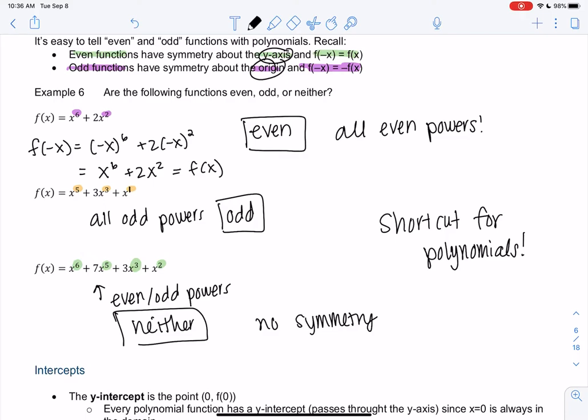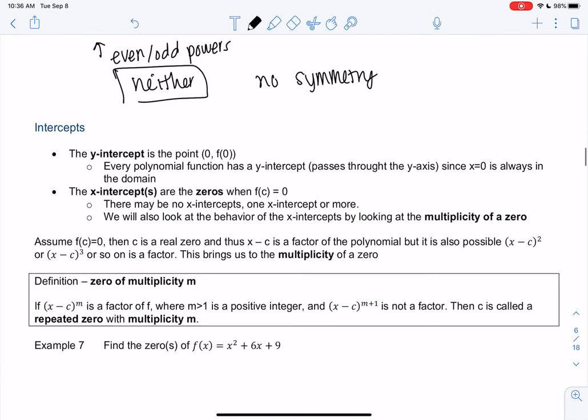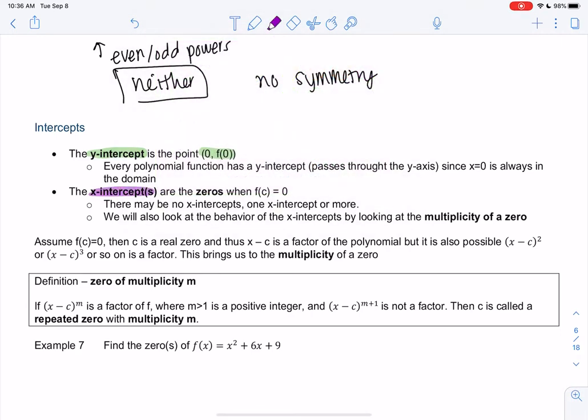The last thing for graphing is intercepts. We've already done the y-intercept a lot - you just plug in 0. Every polynomial function will have a y-intercept because x equals 0 is always in the domain. The x-intercepts are different - there may be none, one, or more. That's when we set it equal to 0 and solve. Those were called zeros.